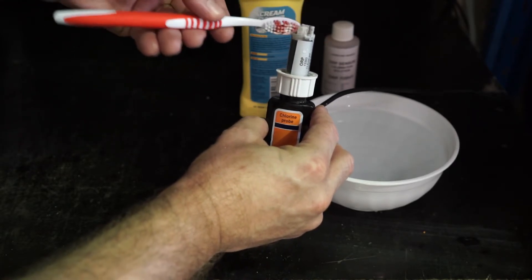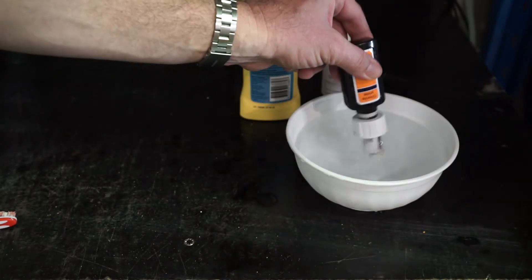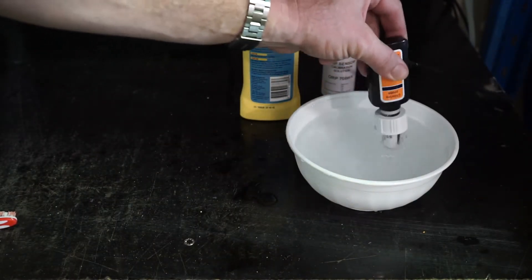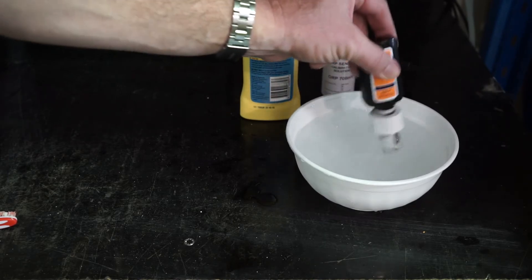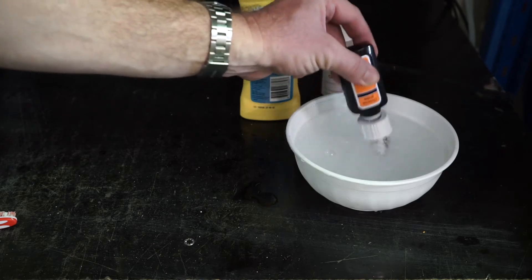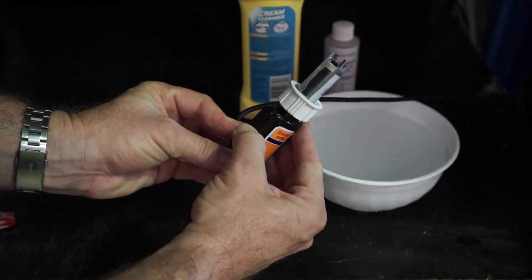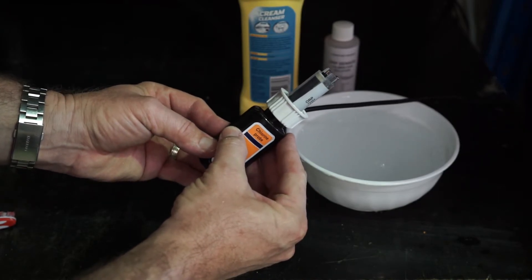And then, as previously, what we're going to do is simply wash that away with fresh clean water. And now that is our gold tip, cleaned and ready for calibration.